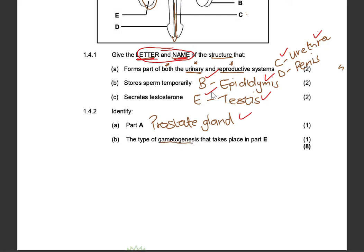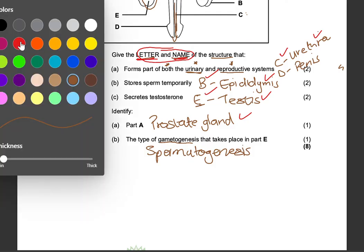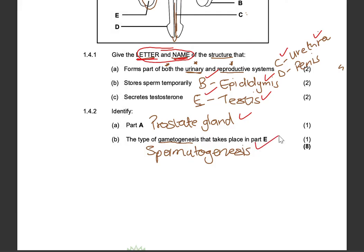Next: identify the type of gametogenesis that takes place in part E. Part E is the testis. Gametogenesis is the process where gametes are formed. The type that takes place in males — in the testis, specifically in the germinal epithelium of the seminiferous tubules — is spermatogenesis. That's it for this question paper.